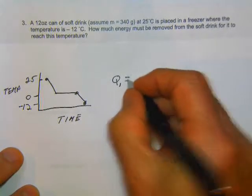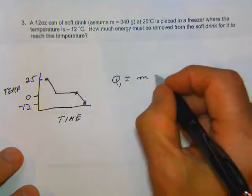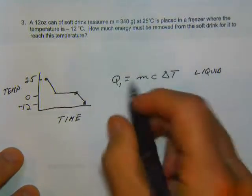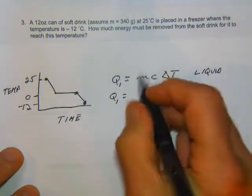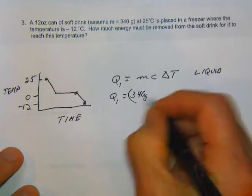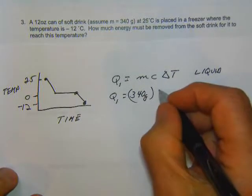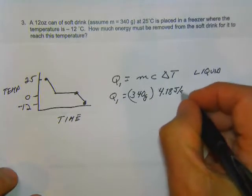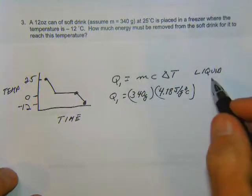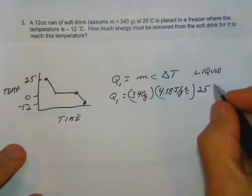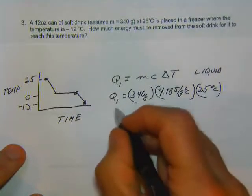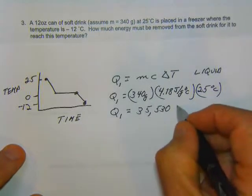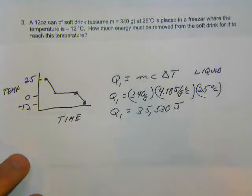Q1 equals MC·ΔT for the liquid. We have a mass of 340 grams, C is 4.18 joules per gram degrees Celsius, and the change in temperature going from 25 to zero is 25 degrees Celsius. So Q1 equals 35,530 joules.